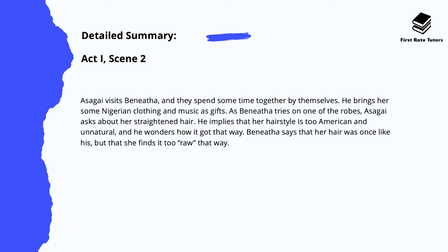Asagai then visits Benita and they spend some time together. He brings her some Nigerian clothing and music as gifts, and as Benita tries on one of the robes, Asagai asks about her straightened hair. He implies that her hairstyle is too American and unnatural, and wonders how it got that way. Benita says that her hair was once like his, but she finds it too, and to quote, 'raw in that way' — in other words, she sees an afro as too raw.